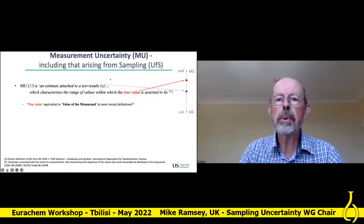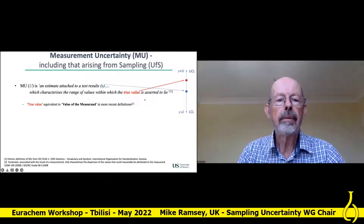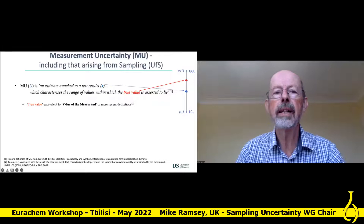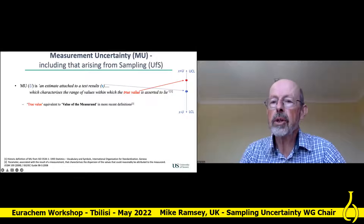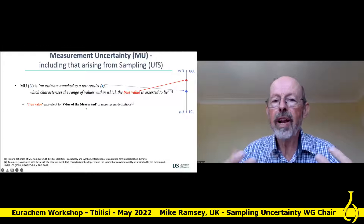You all know what measurement uncertainty is, but I'm going to use an old definition here: an estimate attached to a test result — the blue one — that characterises the range within which the true values are asserted to lie. What we're trying to do is estimate this blue line, and we never know where the true value is, but we need to know where it might be. True value is equivalent to value of the measurand in more recent definitions.